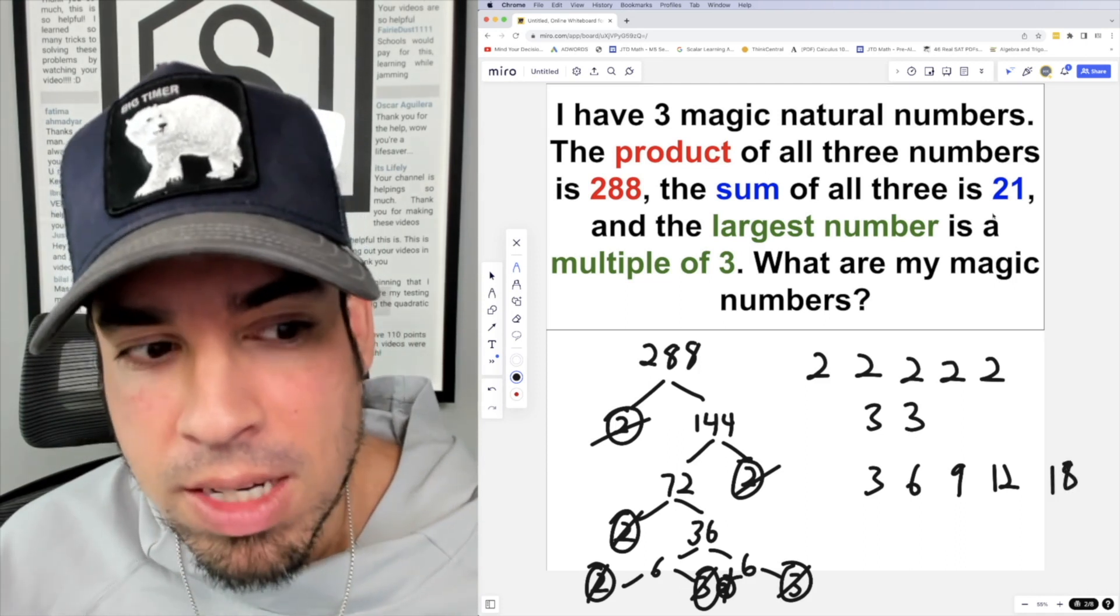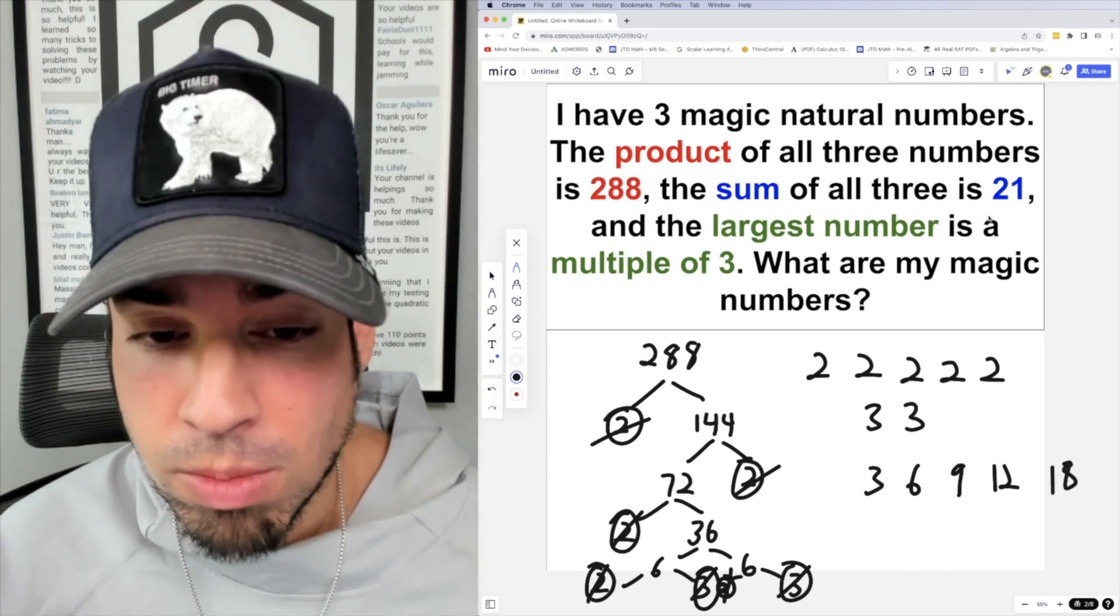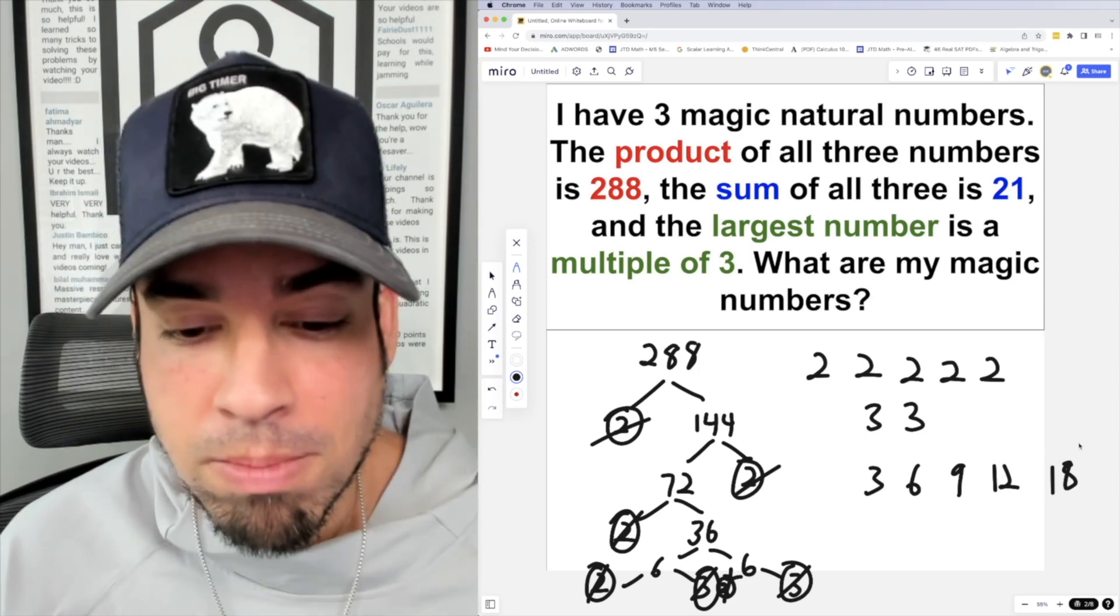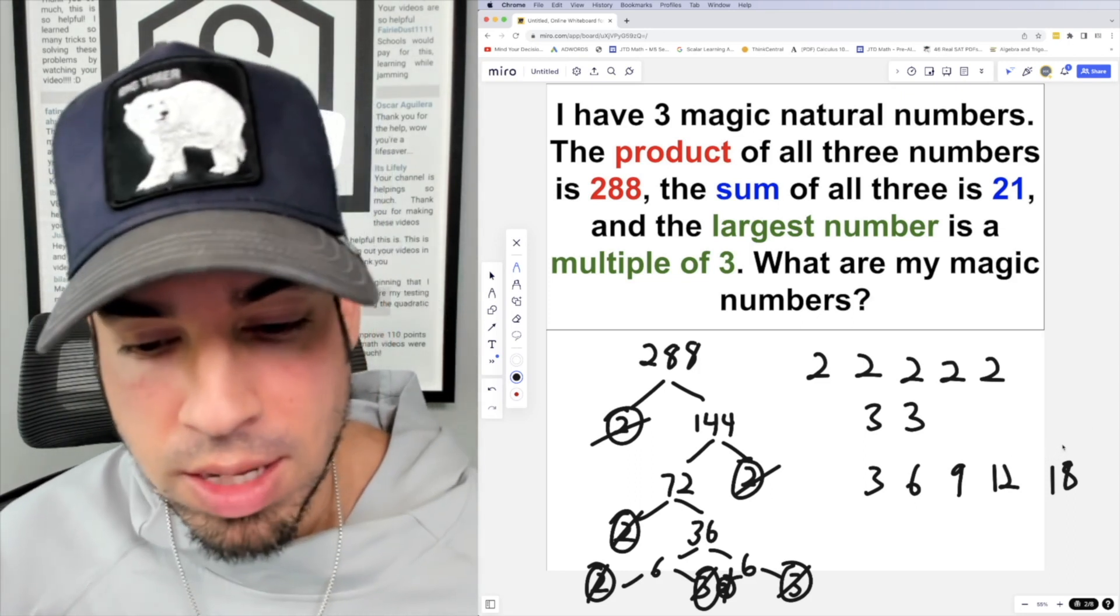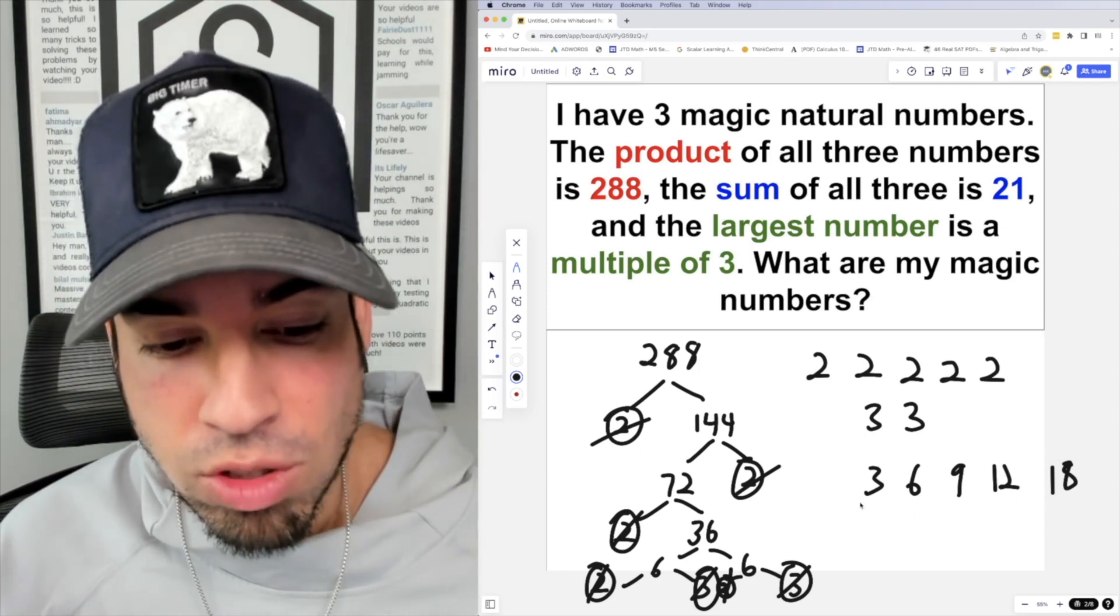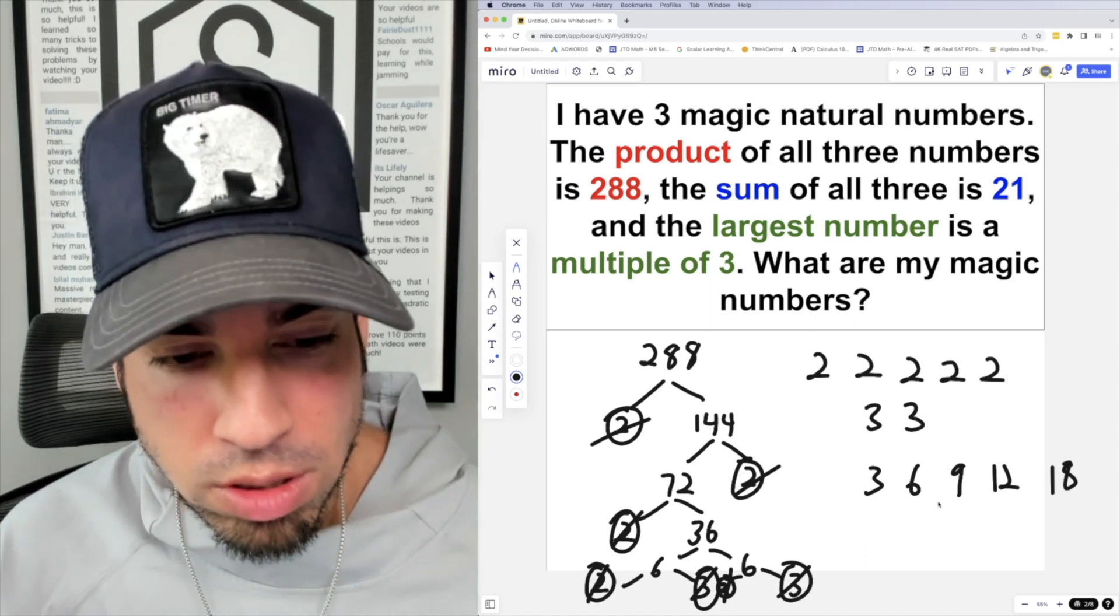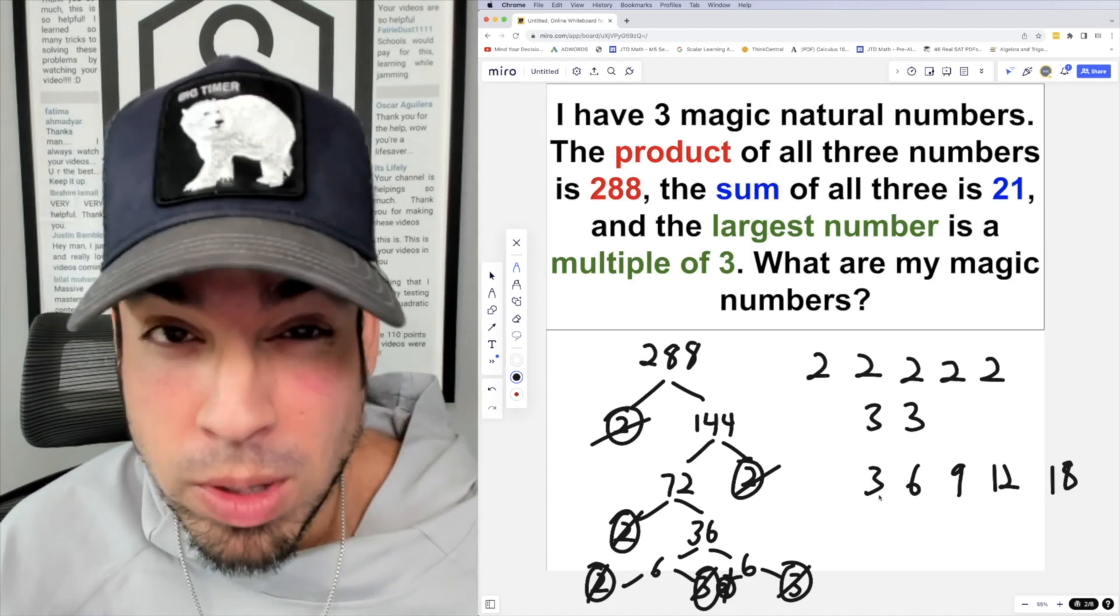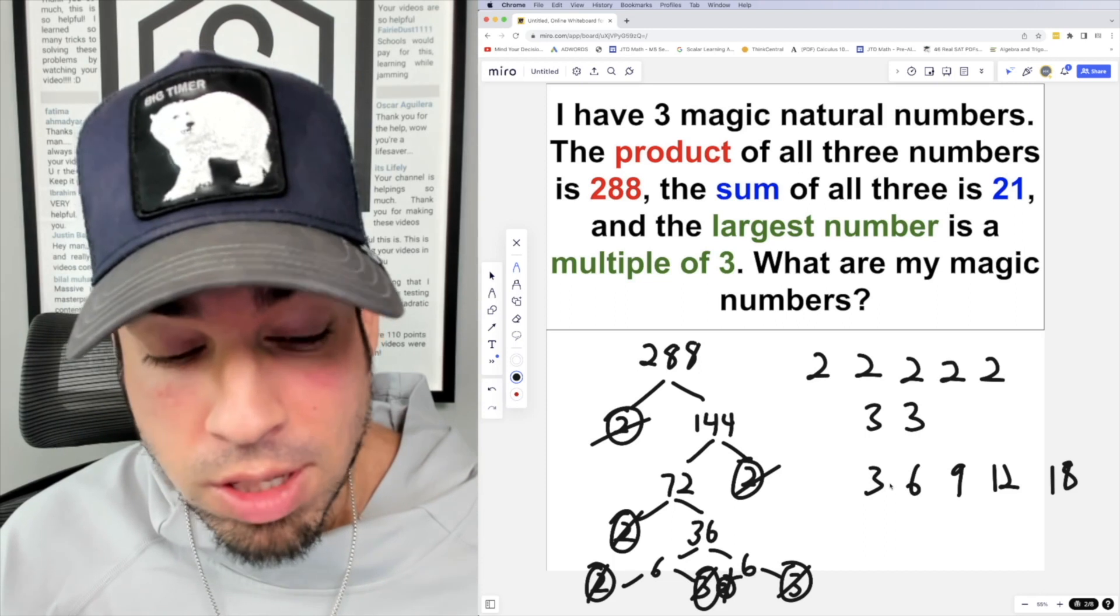Now again, because of that limit that the sum of the three numbers has to be 21, we're not going to get a multiple of three that's going to be bigger than 18. So we're kind of limited to these choices. Now if we take an example of 3, and 3 is supposed to be the largest number, that multiple of three, that doesn't really make sense because what else can you have, 1 and 2? So that's not going to really work.